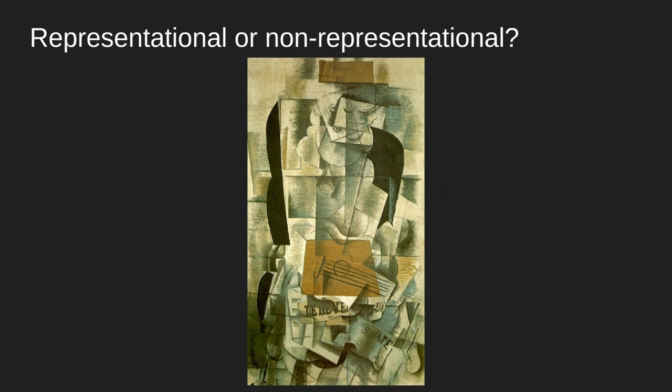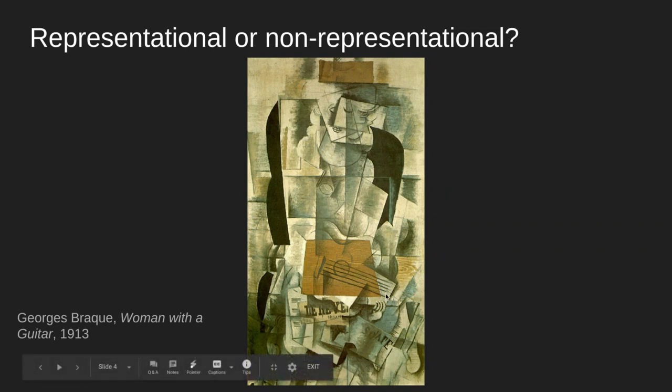I'll pause and let you think about this artwork. This artwork is called Woman with a Guitar. It's an example of a representational artwork. We can see here there is a woman's face with some hair, and down here we can see the guitar.